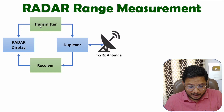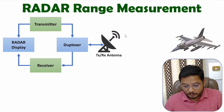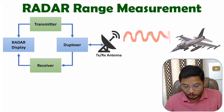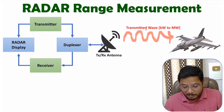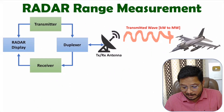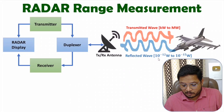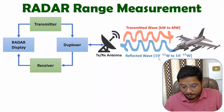The transmitter provides a high power signal to the antenna, which is radiated into space. If any object is present, there will be a reflection of the signal. The transmitted signal has strength in terms of kilovolts to megavolts. If an object is in that space, there will be a reflected signal back toward the antenna.